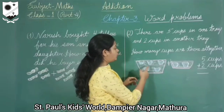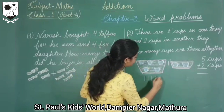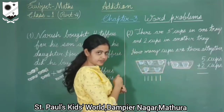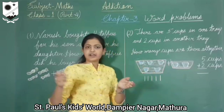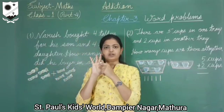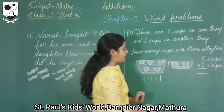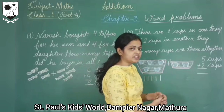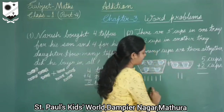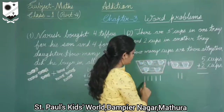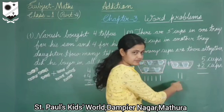So 5 cups means 5 standing lines: 1, 2, 3, 4, 5. We can add using standing lines also. Here I performed addition using fingers and here I will use standing lines: 1, 2, 3, 4, 5, 6 and 7.